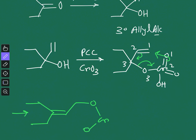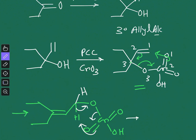The [3,3]-sigmatropic rearrangement gives a rearranged chromate ester containing C=O, another oxygen, and an O-H group. In normal alcohol oxidation after chromate ester formation, an alpha hydrogen is abstracted to give the carbonyl compound. Here, hydrogen abstraction takes place from this rearranged chromate ester, generating a carbonyl group at the new position to give the required aldehyde.